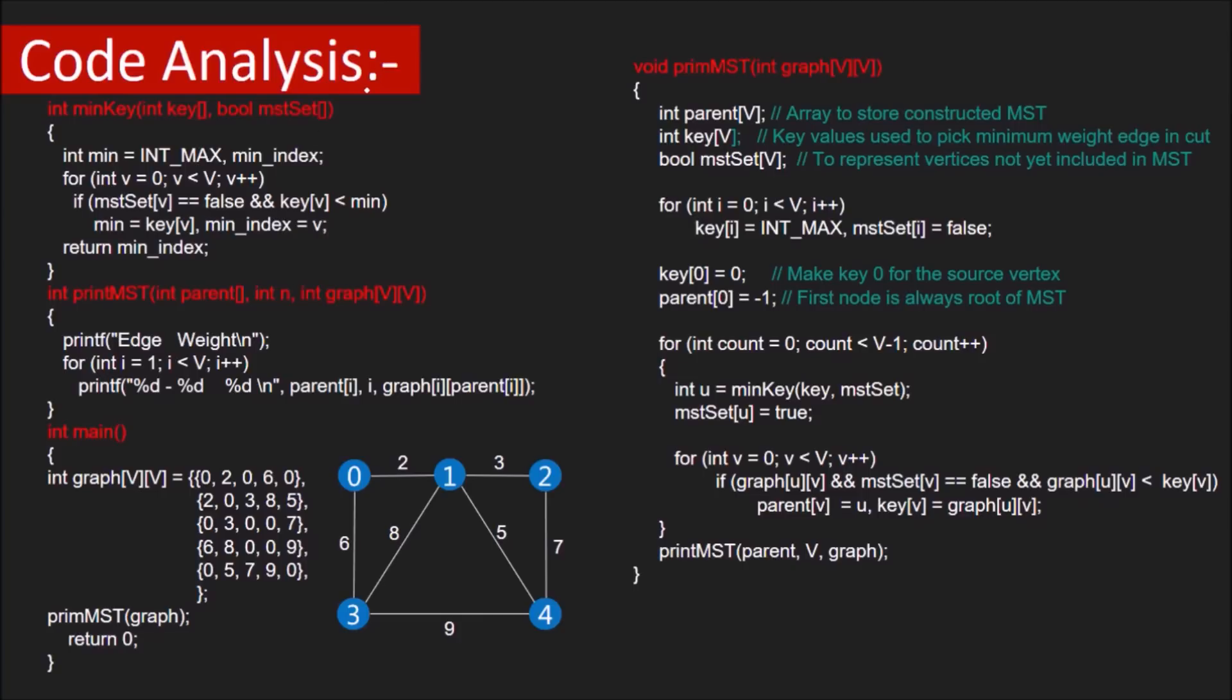Now let's analyze the code for Prim's algorithm. This is an adjacency matrix implementation of the algorithm. Let's start with the main function. We've initialized the graph with the following matrix. The graph contains 5 vertices 0 to 4. Here, 2 represents there's an edge between vertex 0 and 1 with weight 2, and 6 represents an edge between vertex 0 and 3 with weight 6, and so on. Now we call this function. Parent array stores our constructed MST, key stores the key value of v, and MST set keeps track of all vertices not yet included in the MST. Initially, we set the key of all vertices as infinite and none of them belong to MST set yet. Then we set the key of source as 0 and its parent as -1 because it doesn't have any parent.